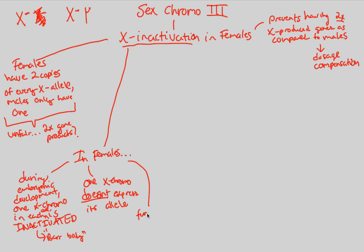Lastly, in females, functionally speaking — and whenever we say functionally we mean on a macro scale — females are also hemizygous, just like their male counterparts. But you might be thinking: if females are hemizygous, then why don't they ever have that issue of not masking bad alleles? How come females can mask colorblindness? It's very interesting, and the answer is a result of the inactivation process itself, which I'll cover shortly.